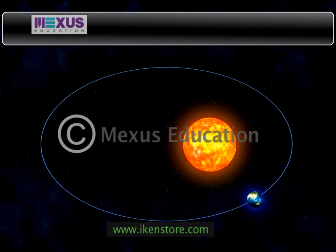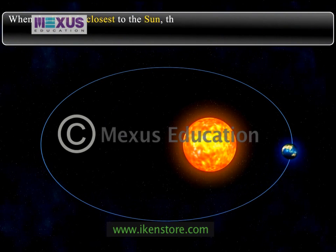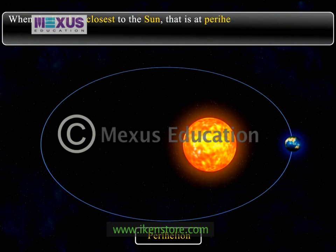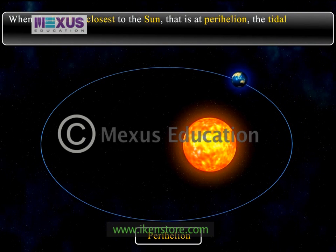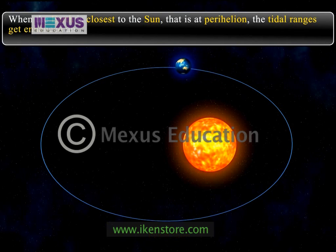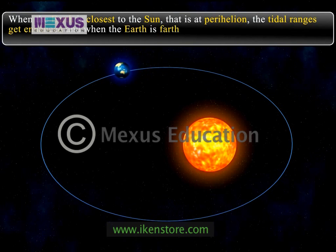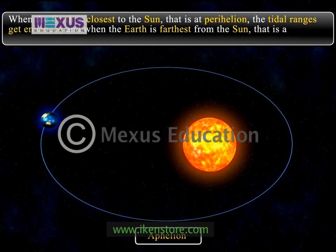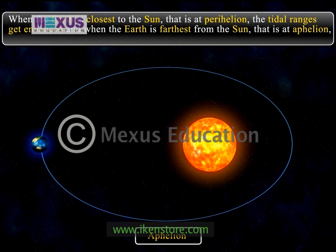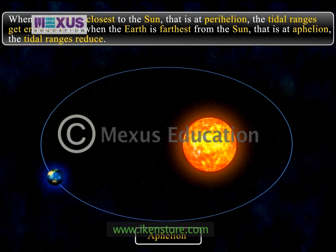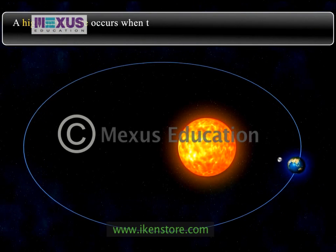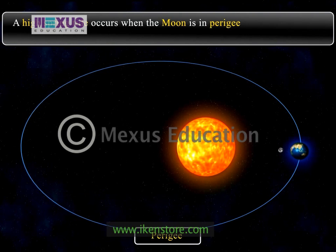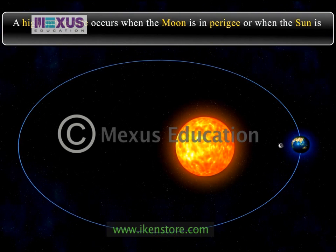Similarly, when the earth is closest to the sun, that is at perihelion, around January 2nd of each year, the tidal ranges get enhanced. When the earth is farthest from the sun, that is at aphelion, around July 2nd, the tidal ranges reduce. A high spring tide occurs when the moon is in perigee or when the sun is in perihelion.